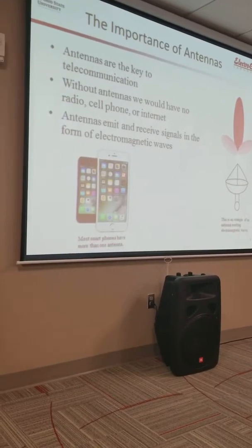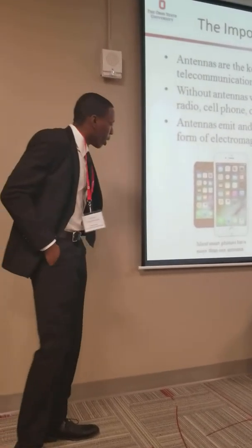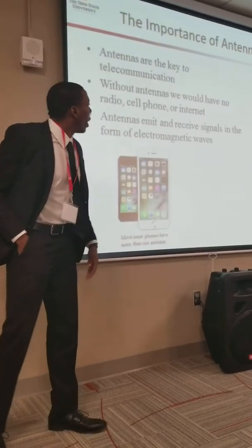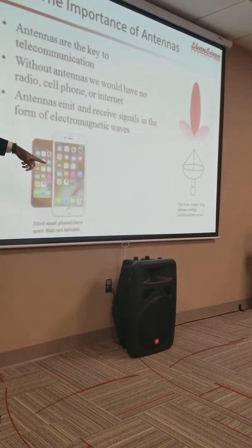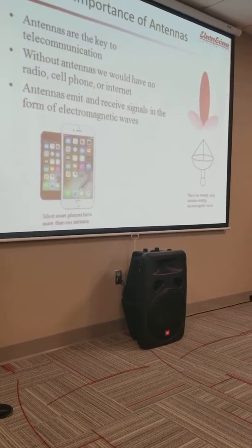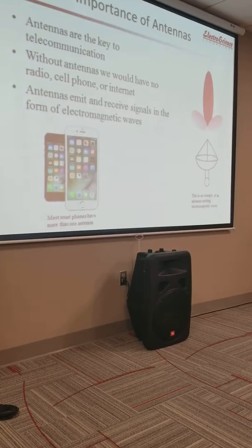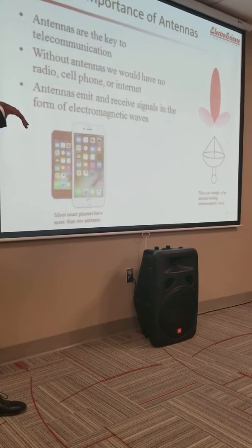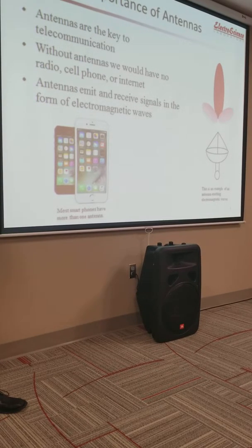Electromagnetic waves are essentially a signal you can't really see. In the diagram shown, the red area is called the frontal lobe of the electromagnetic wave, and the pink areas are the side lobes. Antennas can both emit and receive signals. The one shown is emitting an electromagnetic wave, and another antenna has the ability to receive it — that's how we use antennas in telecommunication.